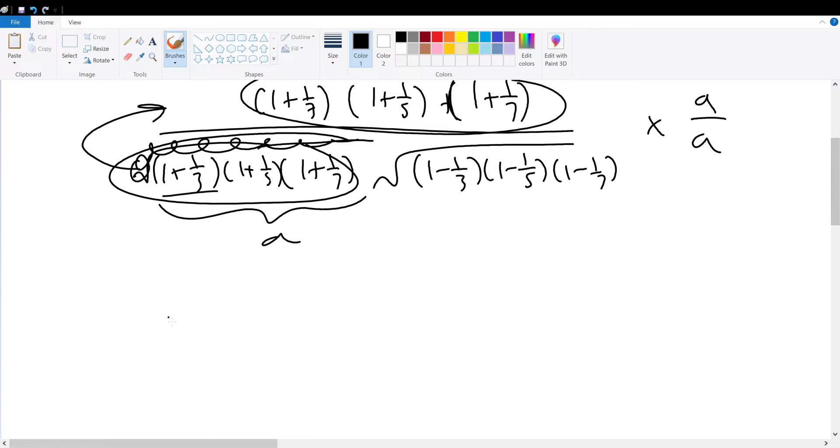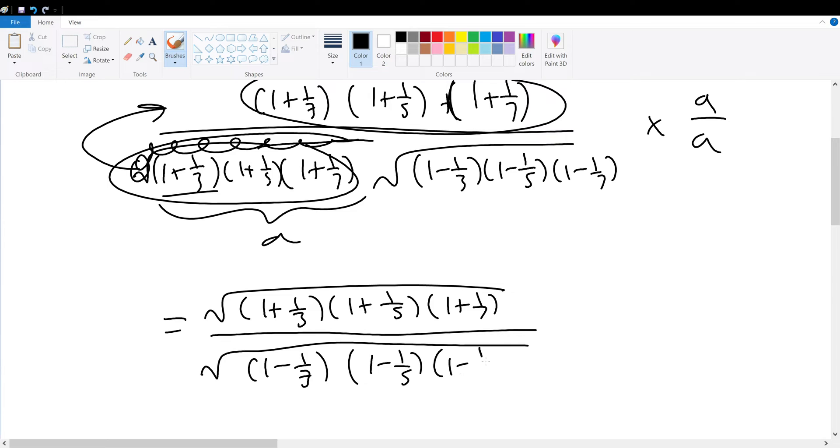Which becomes the square root of 1 plus 1 over 3, times 1 plus 1 over 5, times 1 plus 1 over 7, all over the square root of 1 minus 1 over 3, times 1 minus 1 over 5, times 1 minus 1 over 7.